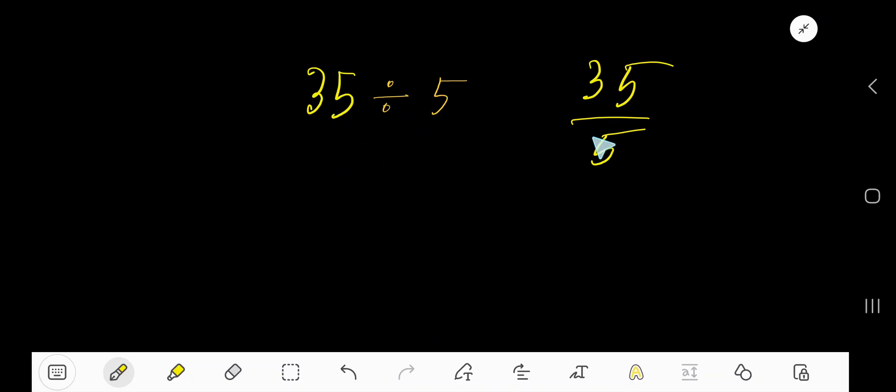35 divided by 5. Okay, 35 divided by 5. Let me divide 35 and we need to divide 35 by 5.